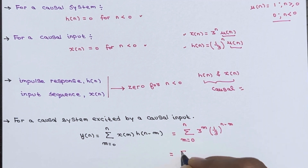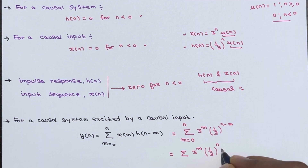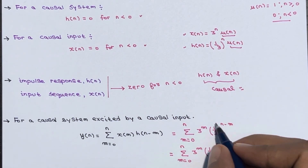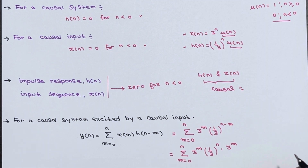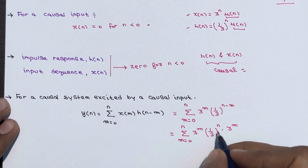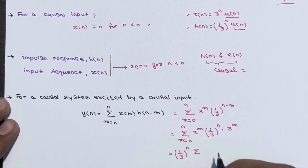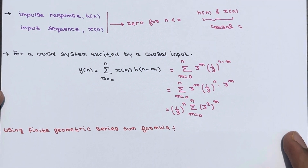This becomes a summation of 3^m · (1/3)^(n−m), which we can write as (1/3)^n · Σ 3^m · 3^m = (1/3)^n · Σ (3²)^m, where m ranges from 0 to n. The (1/3)^n term can be brought outside the summation, giving (1/3)^n · Σ (9)^m from m = 0 to n.